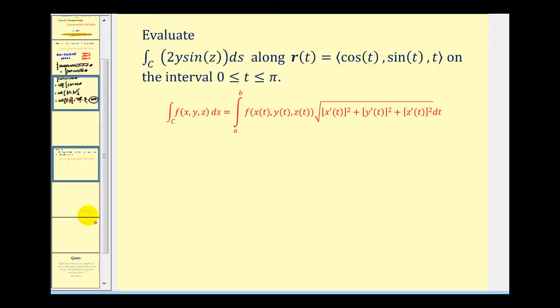Let's take a look at another example. Here we want to integrate the following line integral along r of t equals (cosine t, sine t, t), which is a helix, on the closed interval from zero to pi.